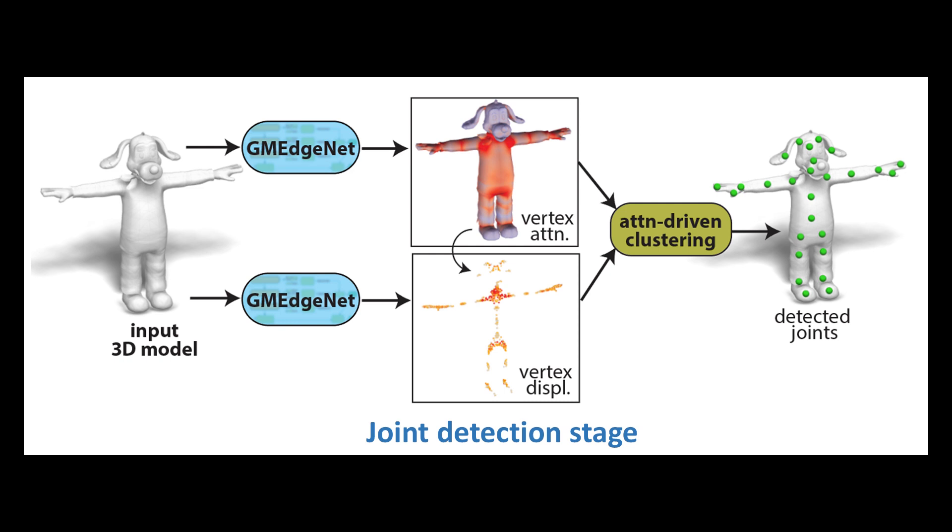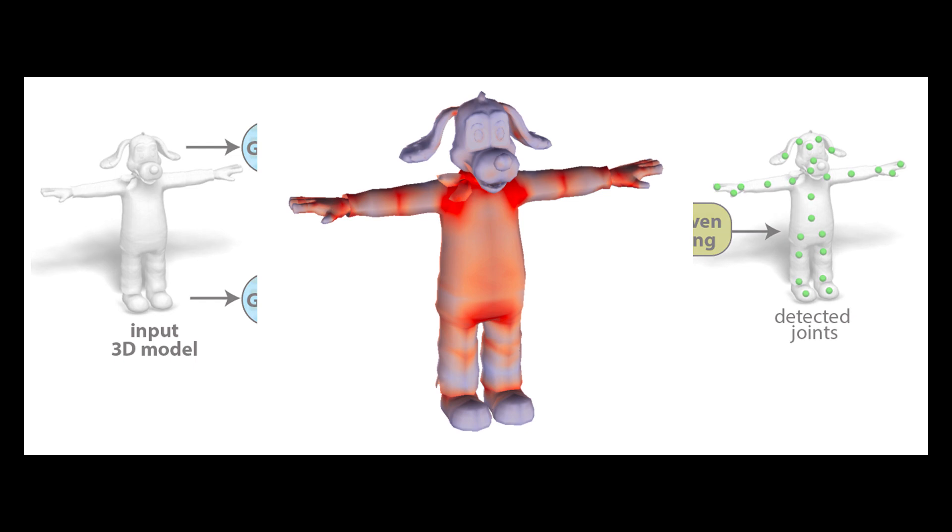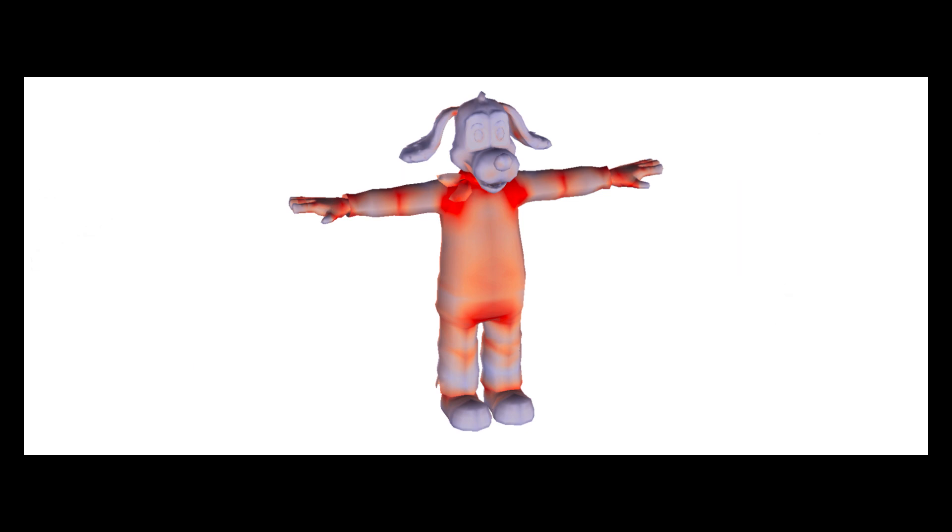The key idea of this stage is a learned weight function, a form of neural mesh attention which is used to reveal surface areas that are more relevant for localizing joints. Redder values mean higher attention.